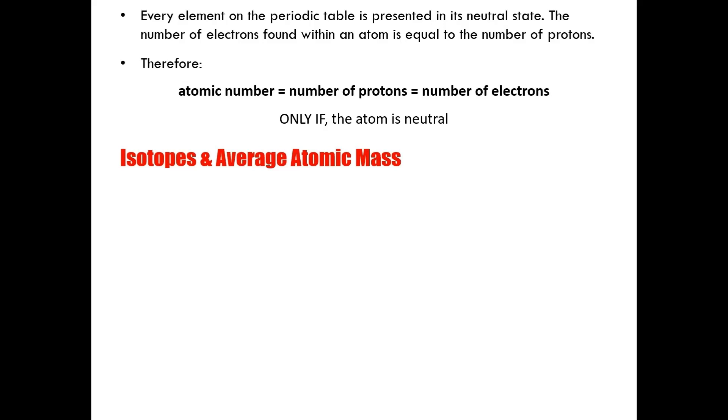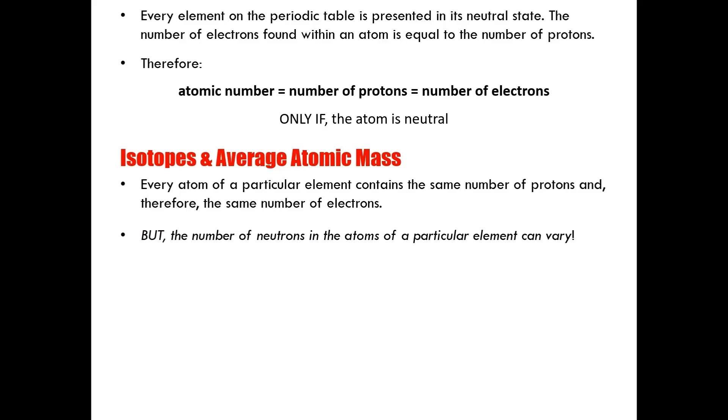With an understanding of atomic number and atomic mass, we arrive to the concept of isotopes. So we know that every atom of a particular element contains the same number of protons and therefore the same number of electrons. But many students fail to realize that the number of neutrons in the atoms of a particular element can vary. Isotopes are atoms of an element that have the same number of protons, but different numbers of neutrons.